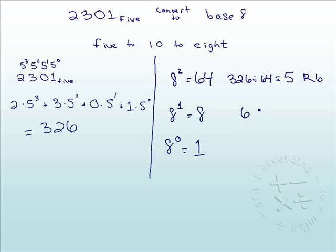You take your remainder and divide it by the next power. 6 divided by 8—well, 8 doesn't go into 6, so that would be 0. What's the remainder going to be? Wait for it: the remainder is still 6 because you still have that 6 left over. Nothing was taken out.